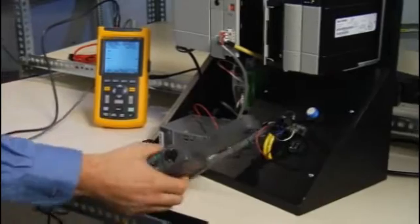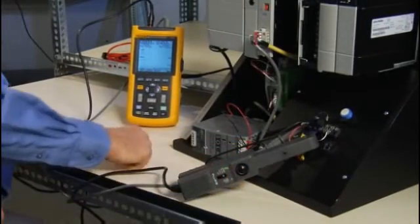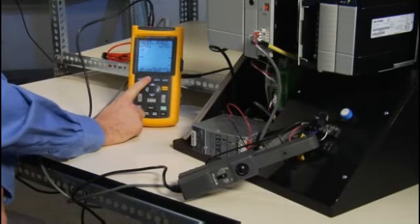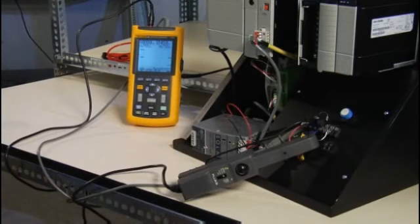We'll connect channel A using a current clamp across a DC supply conductor and channel B across a DC output voltage. With the Scope Meter, we could plot this over time so we can see the load current changes.